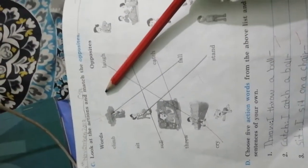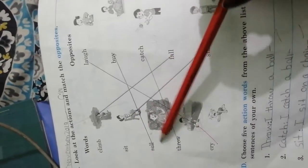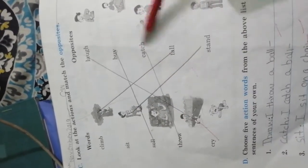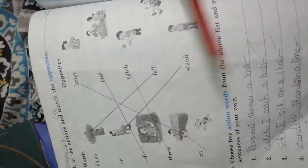Move to next page, page number 66. Look at the actions and match the opposites: sword and opposite, climb fall, sit stand, sell buy, throw catch, cry laugh. Choose the action words from the above list and make sentences of your own.